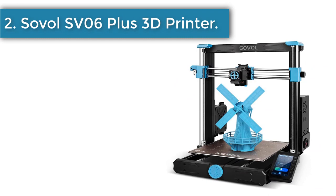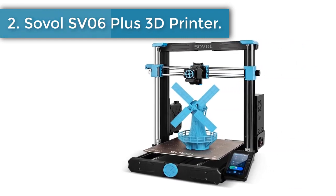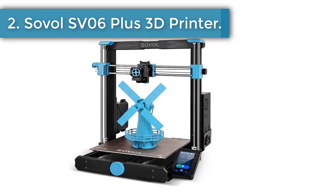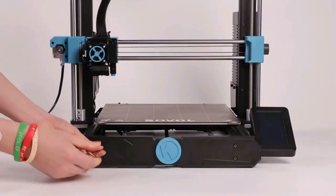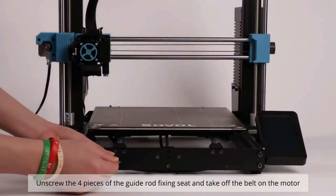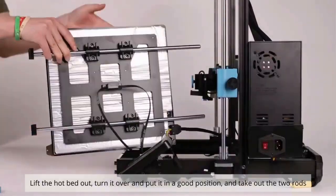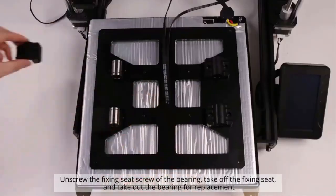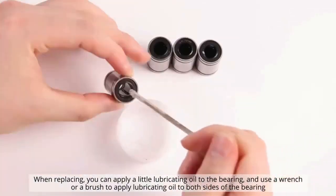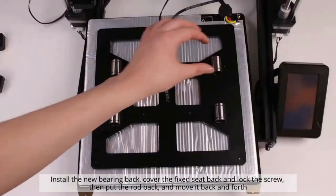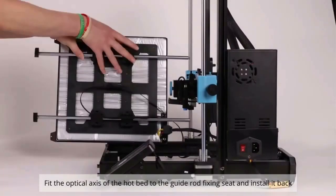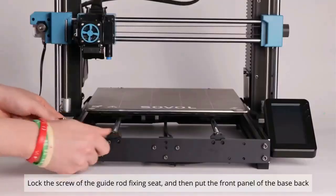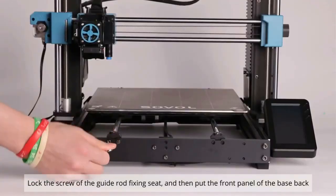Number 2. Sovol SV06 Plus 3D Printer. Different from most 3D printers run by wheels in the market, SV06 Plus has a classic i3 structure which avoids wear and tear of wheels and multiple replacements. 300 x 300 x 340 printing size makes SV06 Plus unique among i3 structure 3D printers. Modular design allows you to assemble SV06 Plus within 5 steps easily, more applicable for household use.